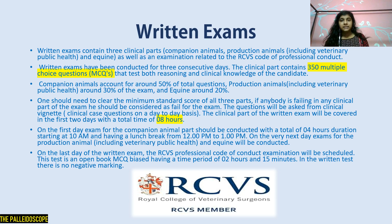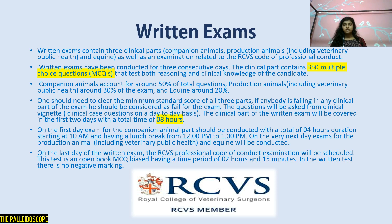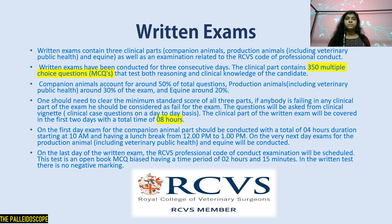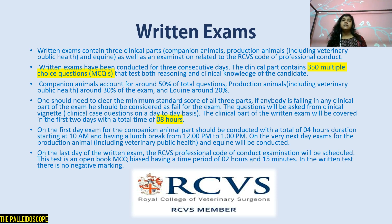The written exam contains three clinical parts: companion animals, production animals, and equine, as well as an examination on the RCVS code of professional conduct, conducted over three consecutive days. The clinical part contains 350 multiple choice questions testing both reasoning and clinical knowledge. Companion animals account for around 50% of total questions, production animals including veterinary public health around 30%, and equines around 20%. You must clear the minimum standard score in all three parts — failing any one will not do.